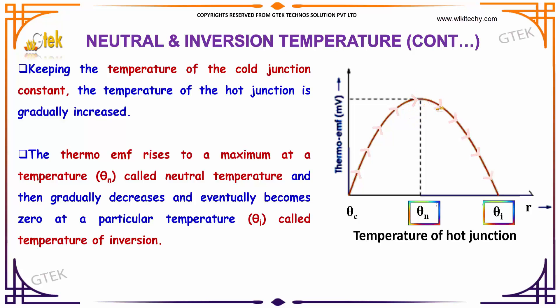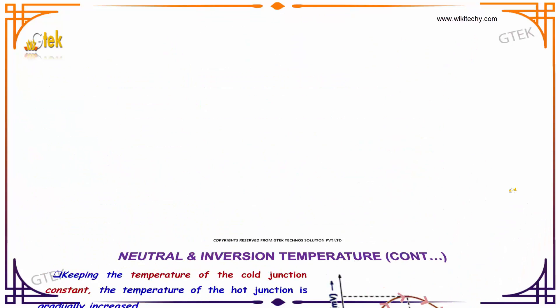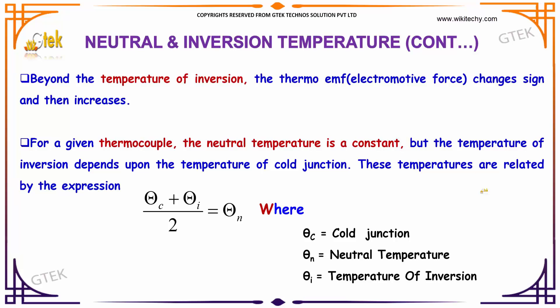After reaching the neutral temperature θ_n, the thermo-EMF gradually decreases and eventually becomes zero at a temperature called the temperature of inversion. Beyond the temperature of inversion, the thermo-EMF changes sign and then increases. For a given thermocouple, the neutral temperature is a constant, but the temperature of inversion depends on the temperature of the cold junction.